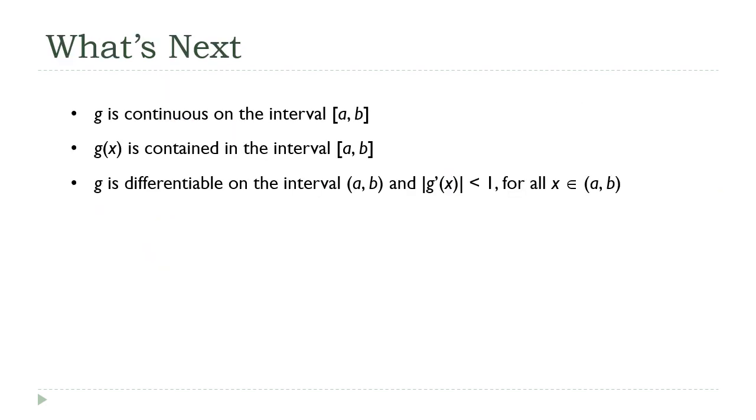So the key things I want you to take away from this are these first two points here. This is the requirement that g is continuous on the interval from a to b, and g of x is contained in the interval from a to b. This is what I call the box criterion. It puts a box around our function. And second, this is the idea that we're interested in functions that are differentiable and have the absolute value of the derivative less than one on that open interval. All right, these are some key criteria that we're going to see turn up over and over again throughout the rest of our discussion of not just fixed point iteration, but iterative methods in general.